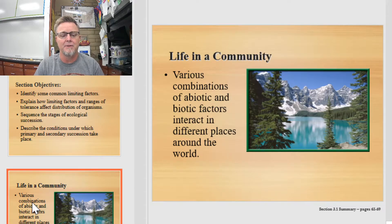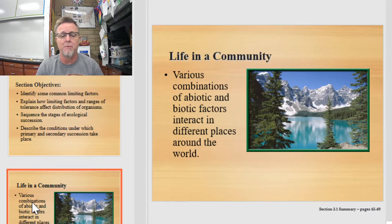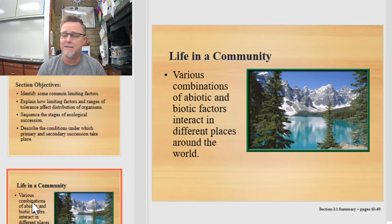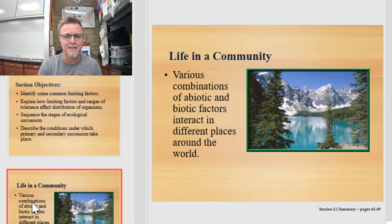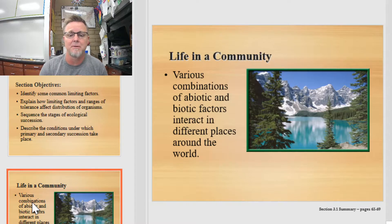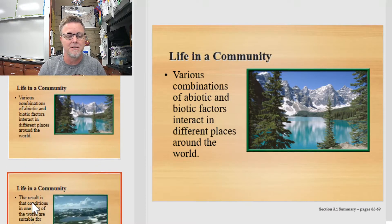When you think about life in a community, there's all kinds of abiotic and biotic factors that are going to interact in specific ways in different places around the world to create the world that we see when we look outside our window. That's why the desert looks like a desert, and the pine forest looks like a pine forest and not a desert. There's a specific combination of abiotic and biotic factors interacting to make each of those areas unique, and that's what we're going to learn about as we explore ecosystems in this chapter.